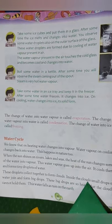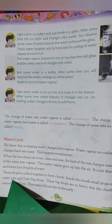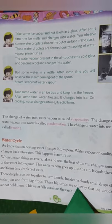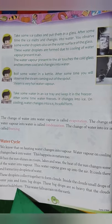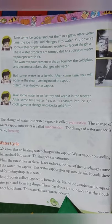Inside the clouds, small drops of water join and form big drops. These big drops are so heavy that the clouds cannot hold them. This water falls as rain on the earth.